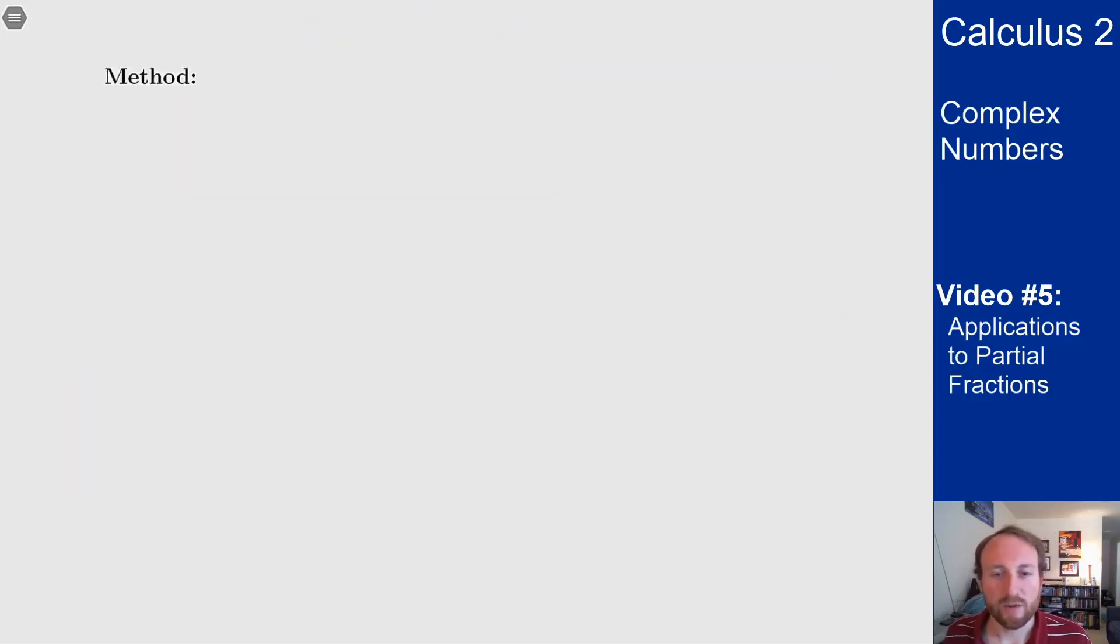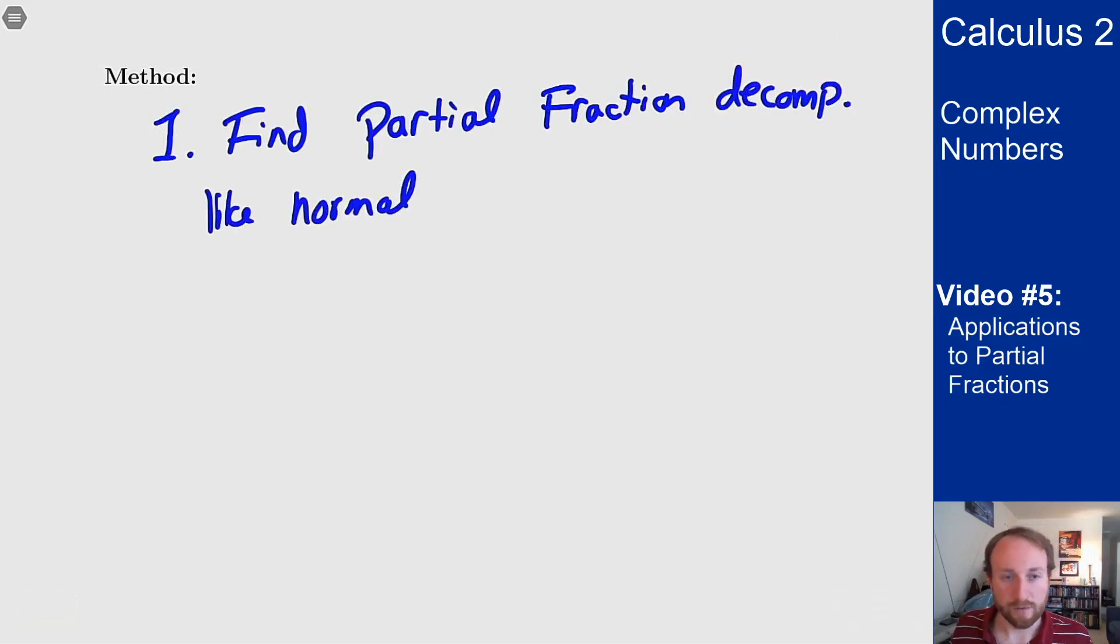So what's the process here? How do we do this? Well the first couple steps are all the same as normal partial fractions. You want to find the decomposition like normal including the irreducible polynomials that you had before.